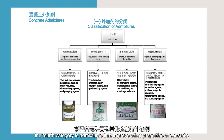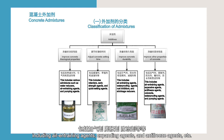The fourth category is admixtures that improve other properties of concrete, including air-entraining agents, expanding agents, and anti-freeze agents, etc.